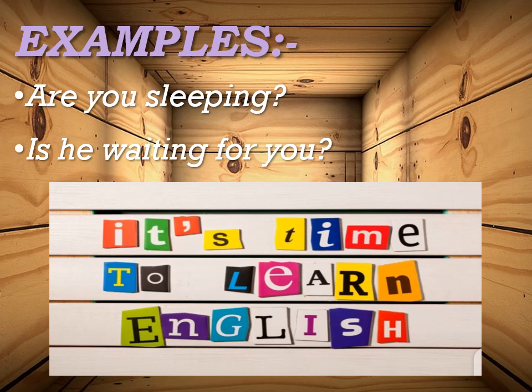For example, jaise humne discuss kiya: Are you sleeping? — us waqt yeh poocha ja raha tha, kya tum so rahe ho? Ab agar reason poocha jaye — tum kyun so rahe ho? — tab hum WH words ka use karenge, kyunke humne answer ab briefly dena hoga. Similarly, Is he waiting for you? — kya woh tumhara intizaar kar raha hai? Lekin ab agar reason poocha jaye — woh tumhara kyun intizaar kar raha hai? — tab hum WH words ka use karenge, kyunke ab answer hume briefly chahiye.